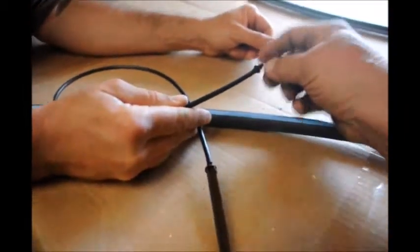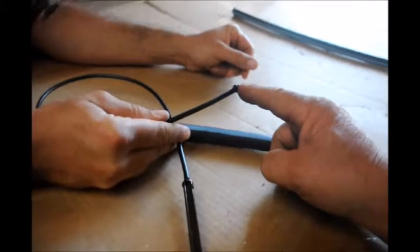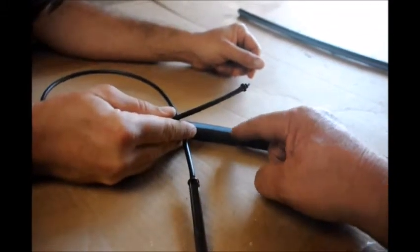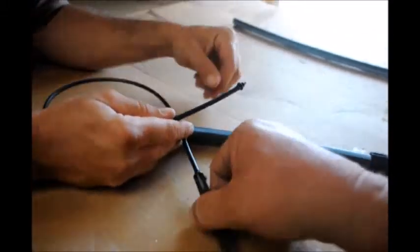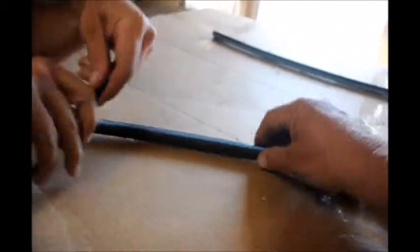This is a nipple, a spaghetti line, and an emitter. Now we have to connect this emitter into that pipe, so we have to make a hole. We're going to use this part here to punch a hole into the pipe.